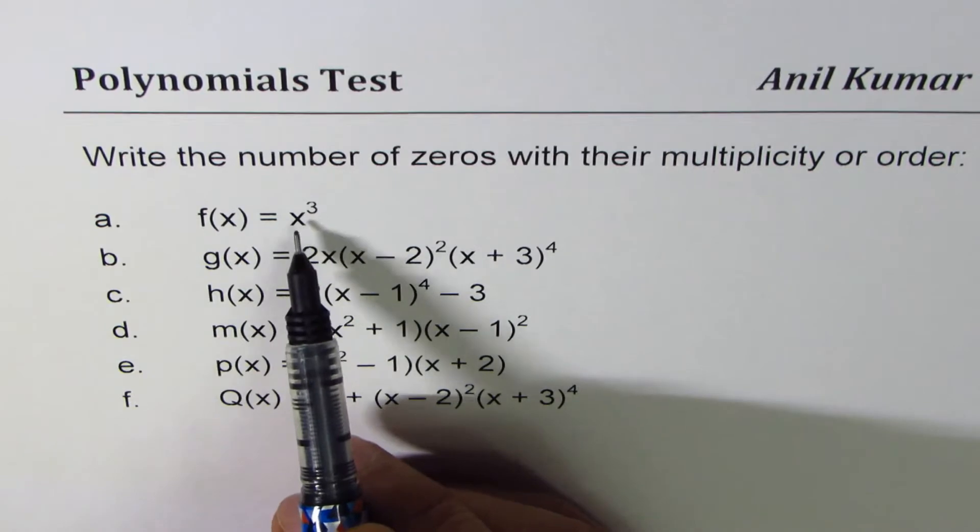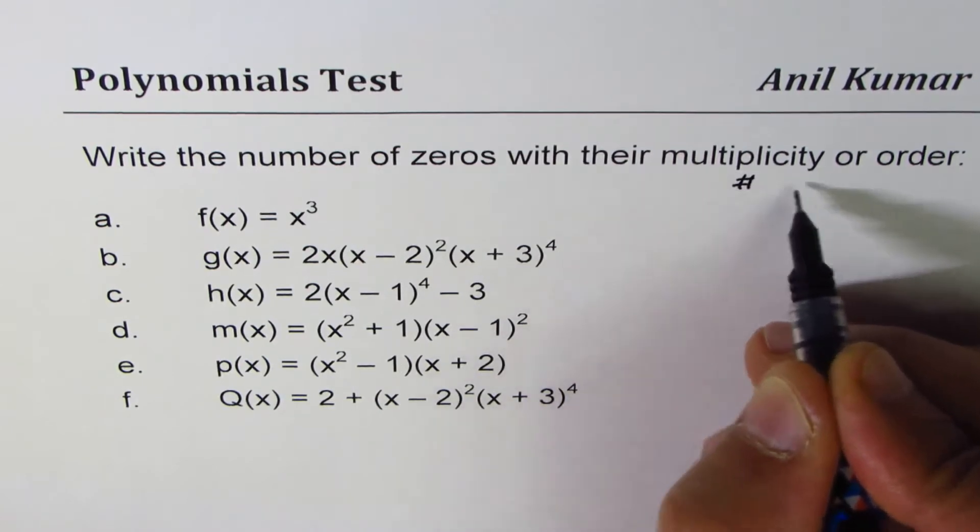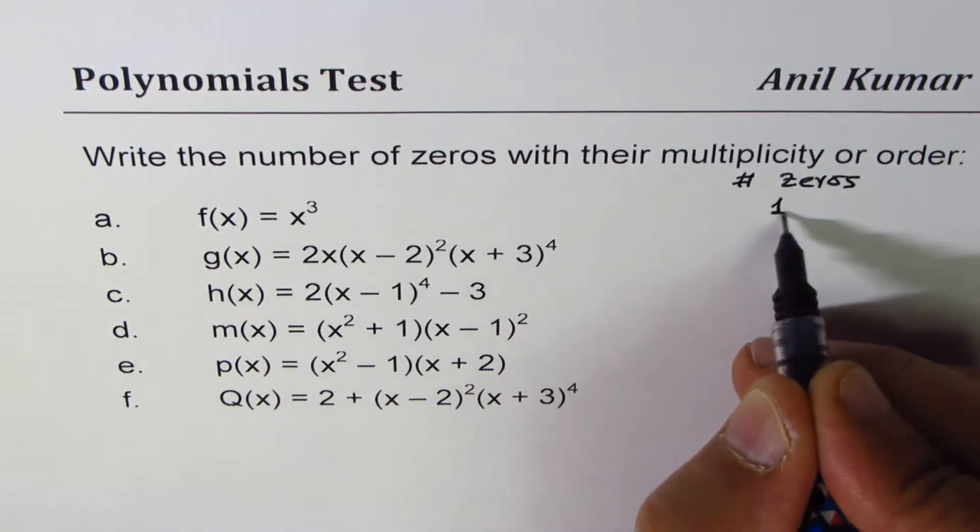For the function, there's only one value x = 0 which is going to give us a zero, so the number of zeros will be just one.